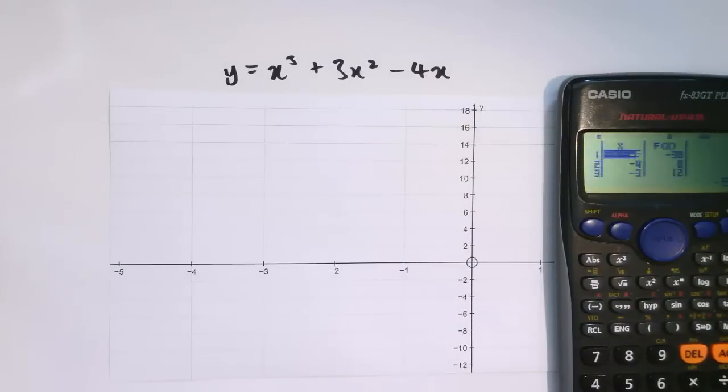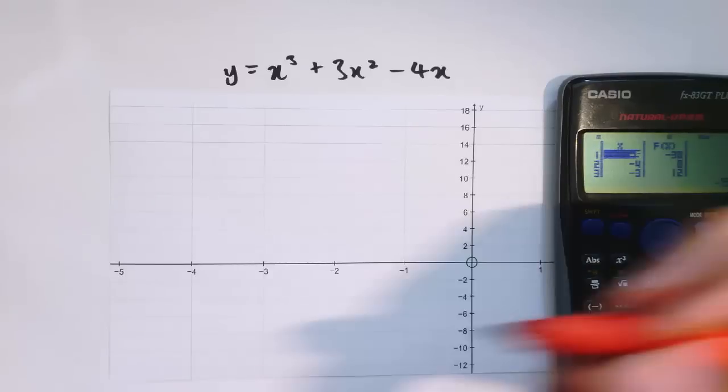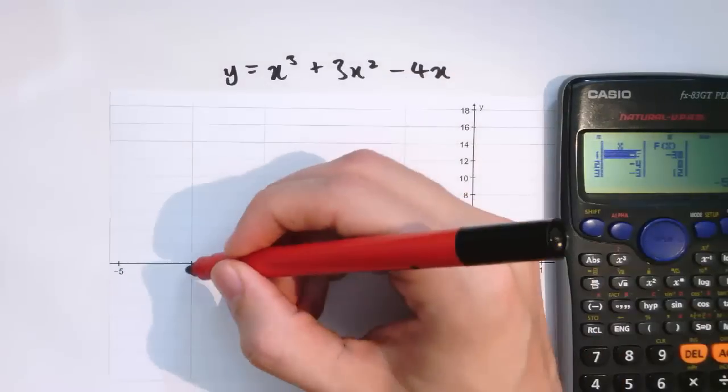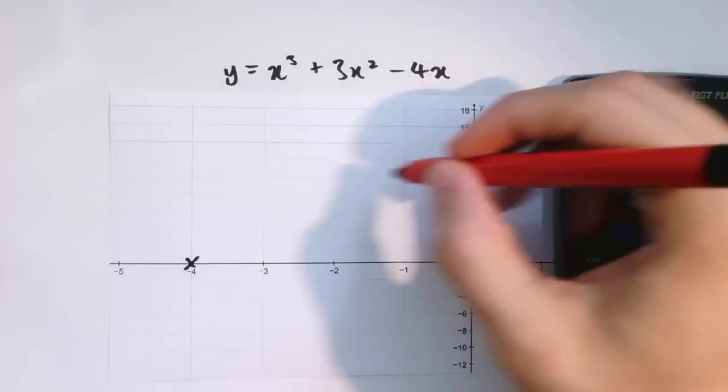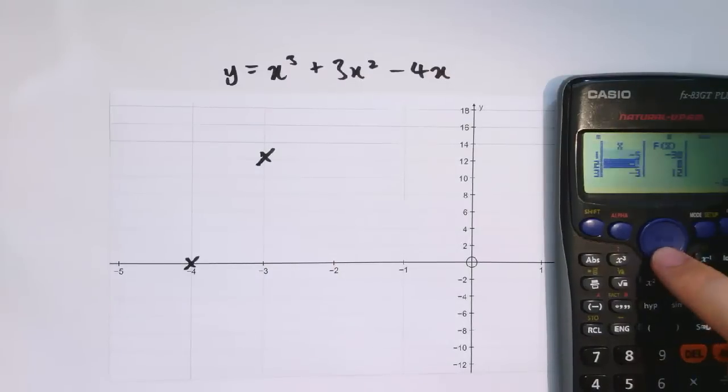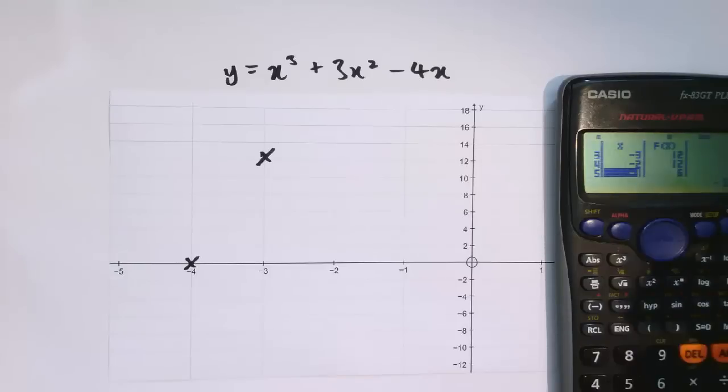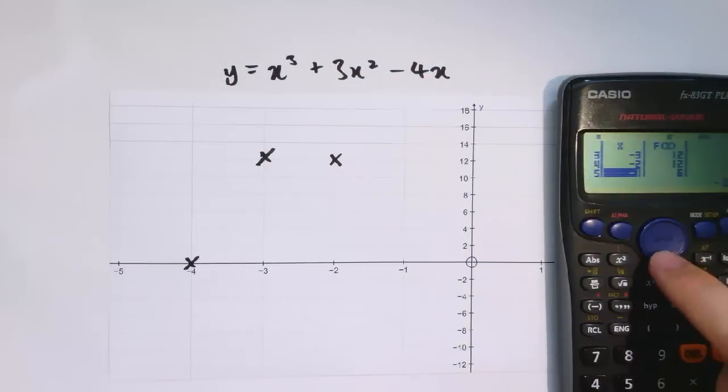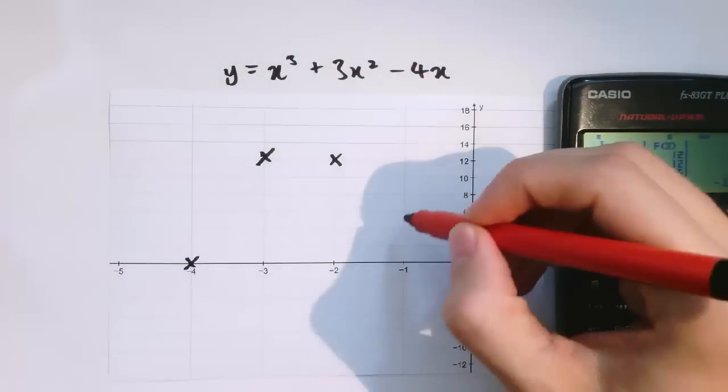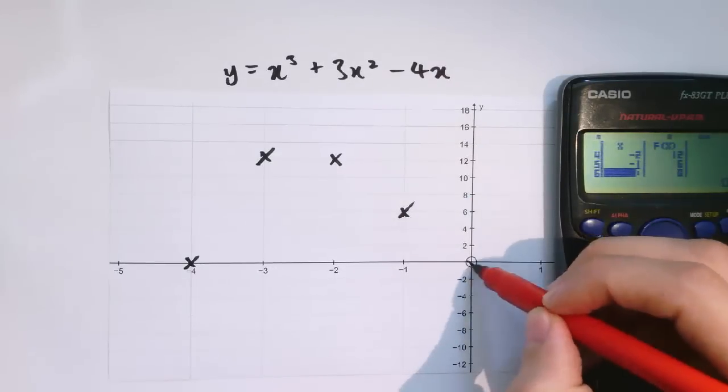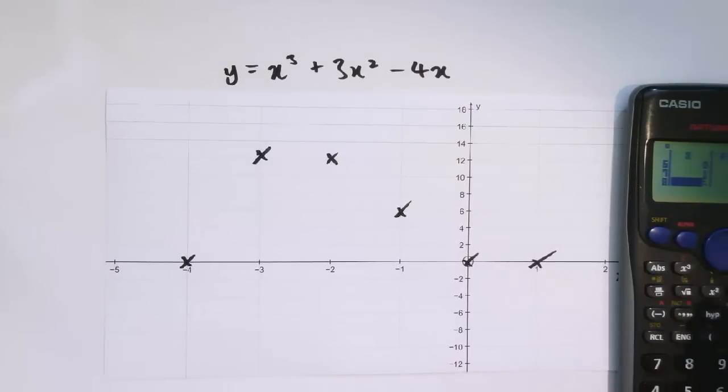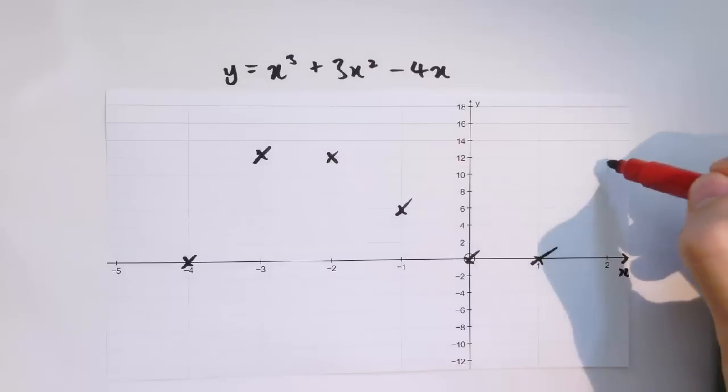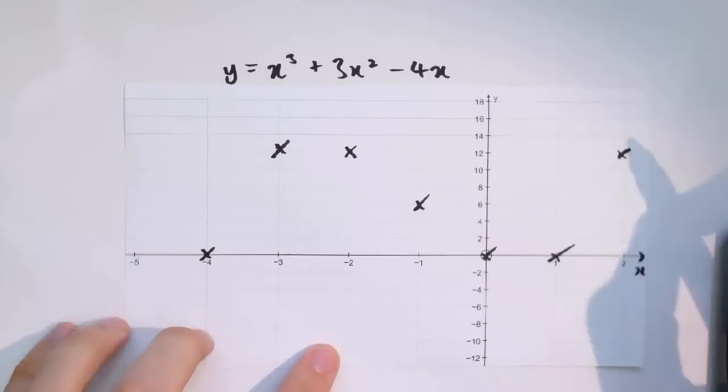If I leave the step at 1, we'll get a table straight away, and I'll just plot on the values that I can. So minus 5 is down at minus 30, that's off the graph. But at x equals minus 4, we've got y equals 0, at minus 3 we've got 12, at minus 2 we've got 12 as well, at minus 1 we've got 6, at 0 it's at 0, at 1 it's at 0, and at 2 it's at 12. So we've got a bit of a sense of what this function looks like.